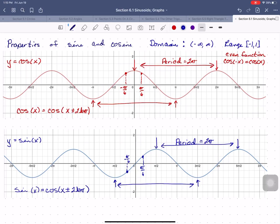What that means is that the sine of negative x is equal to negative sine of x, making sine an odd function.